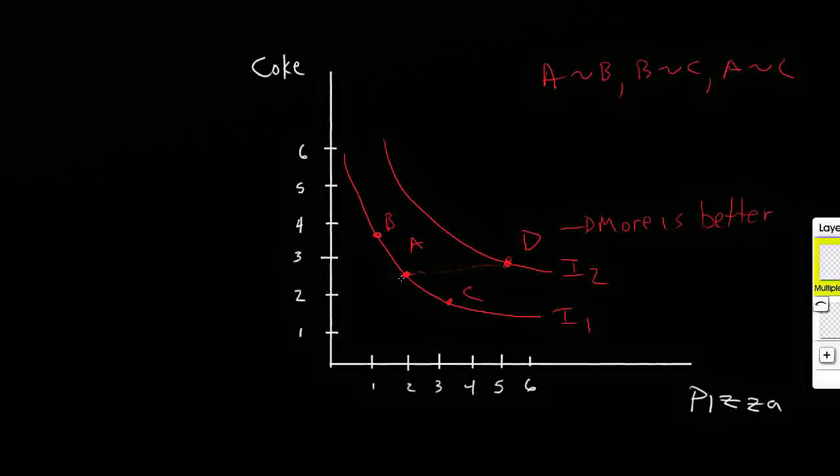E and D are indifferent to E. So what we're showing here is that the more is better property, and this leads us to a conclusion that if I'm on a higher indifference curve, these two points D and E yield the same level of satisfaction. So what I'm showing here then is that any point on this indifference curve I2 is preferred to point A on indifference curve I1.